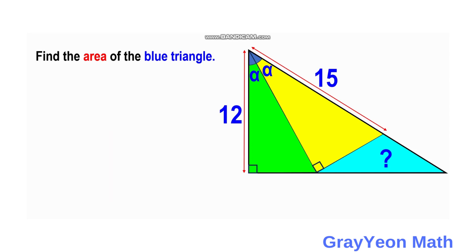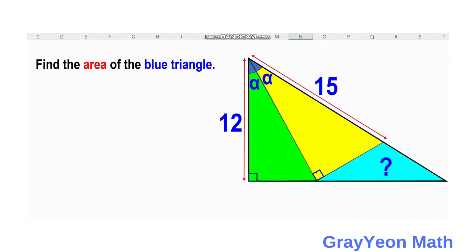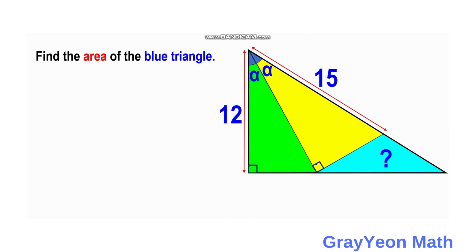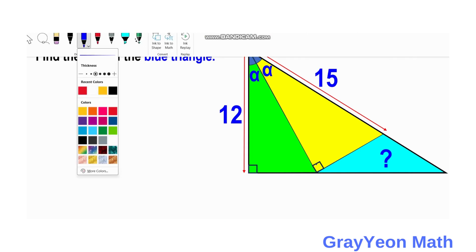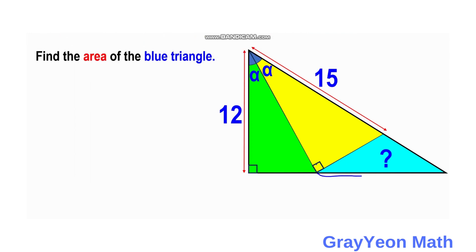To find the area of this blue triangle, our goal is to find the length of the base of the blue triangle. If we find those two lengths then it will be easy to find the area. We will be finding the base length, and also the height of this blue triangle, since the height is the hypotenuse of a related triangle.